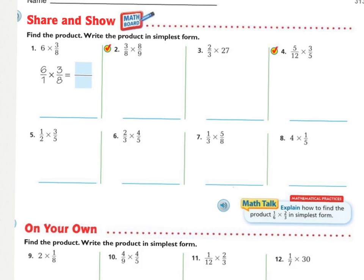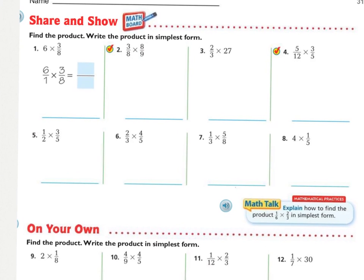Work on the share and show problems. Remember to write the product in the simplest form. That means you do have to reduce and convert from an improper fraction to a mixed number if need be. I will be going over the procedures for numbers two and number four and then I will show you the answers to the rest. Starting at number two, we have three eighths times eight ninths. I am going to rewrite this just so that the numerators are written multiplying each other. We have three times eight over eight times nine.